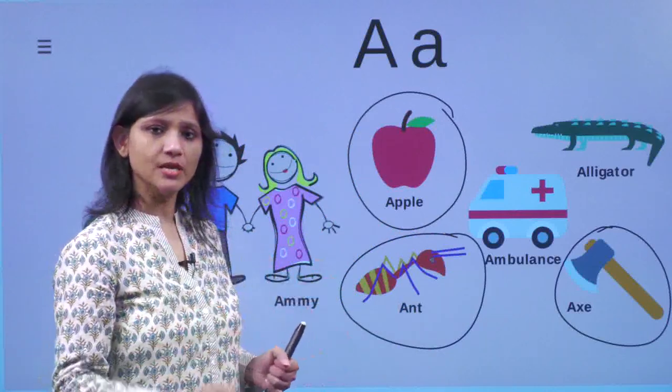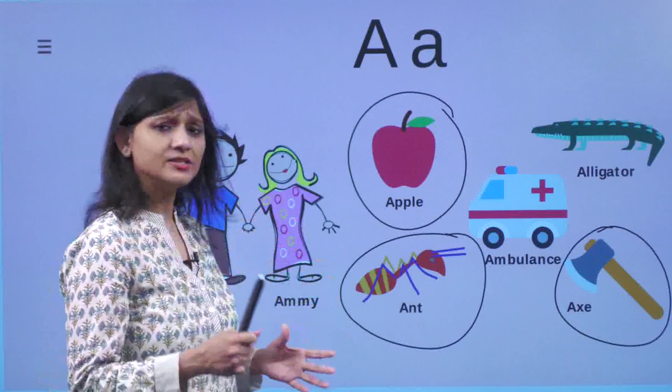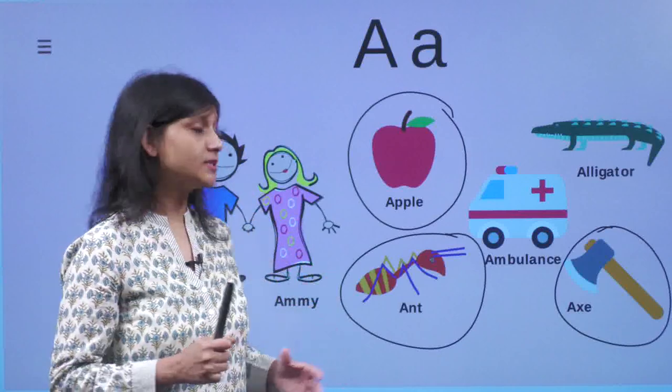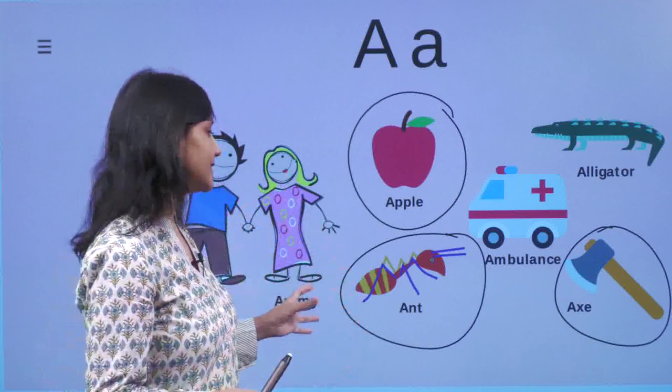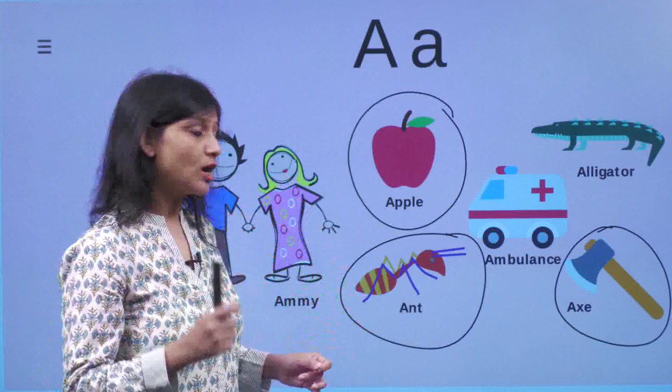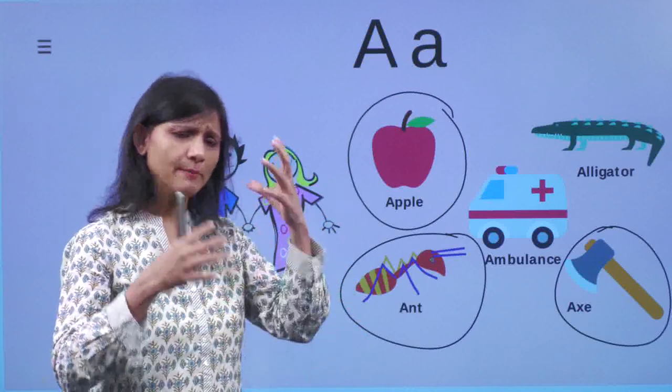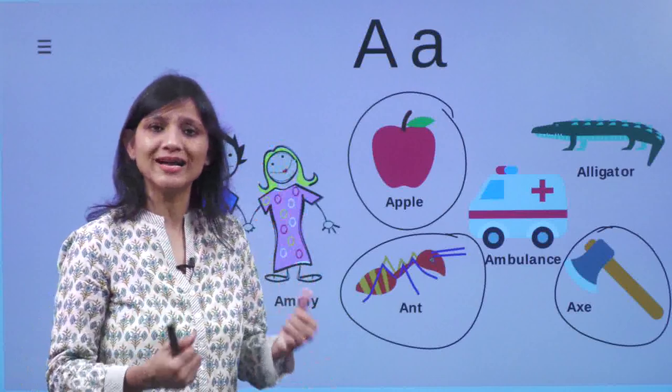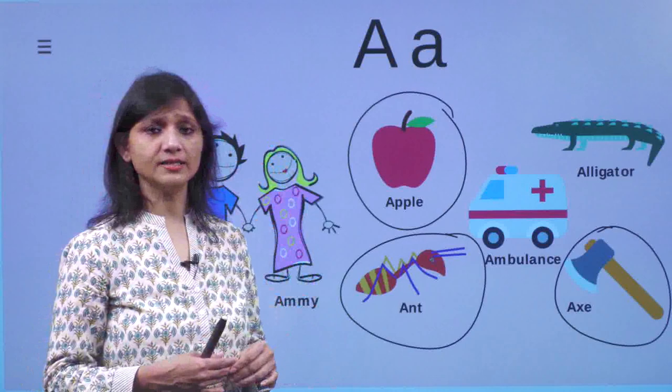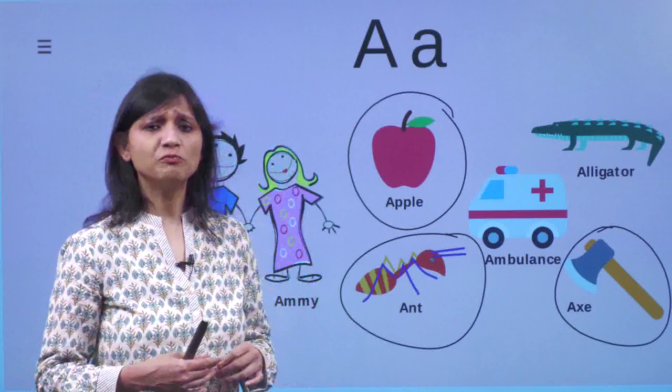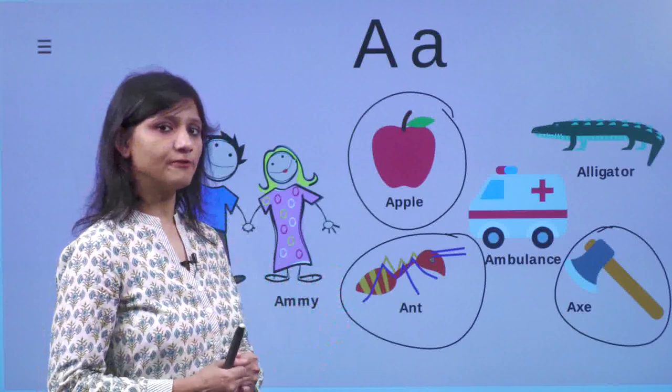Then the ant said, why did Abby pick that axe and start cutting the apple tree? Ami said, it's not his fault, dear ant, he wanted to give me an apple because both of us were feeling hungry. Then the ant said, you need not cut the apple tree if you want an apple, just shake the apple tree, the apples will automatically fall. Then the ant left Ami's foot.